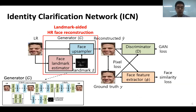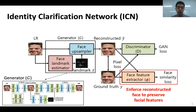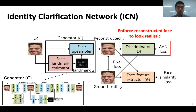First, we utilize a face landmark estimation work to help the face reconstruction process. We also employ the face feature extractor and a face similarity loss to preserve the identity features in the reconstructed faces. Finally, we utilize a discriminator-based training architecture used in state-of-the-art GANs to make the reconstructed faces look realistic.